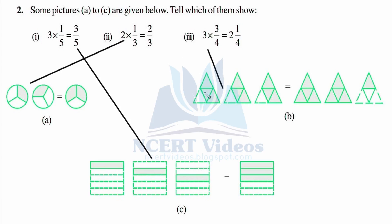To check: three are shaded out of four, and when you combine it becomes two and one over four, that is eight plus one = nine over four. It also means two whole parts — two figures will be completely shaded, as you can see here two figures are completely shaded, and the third one is one over four. That is how this figure is represented as a mixed fraction.